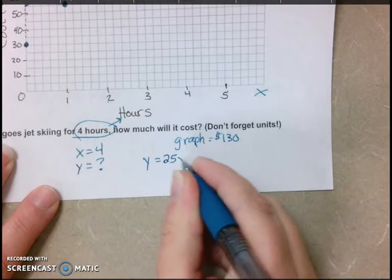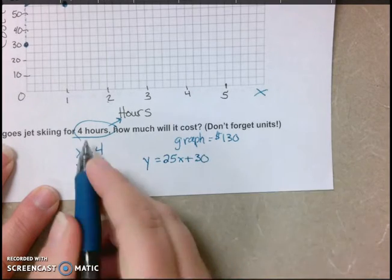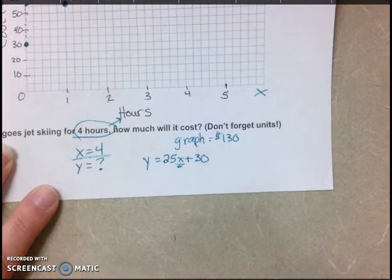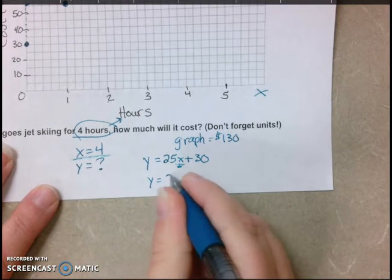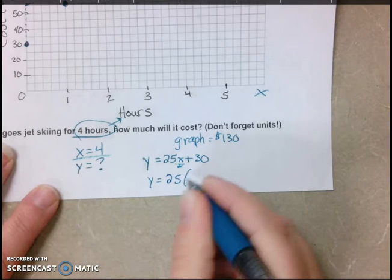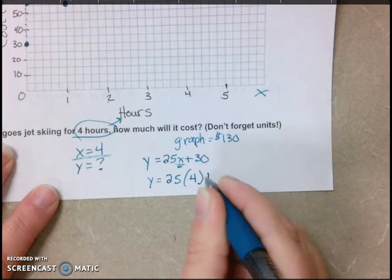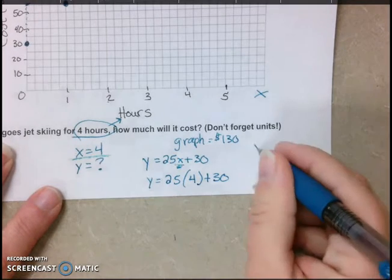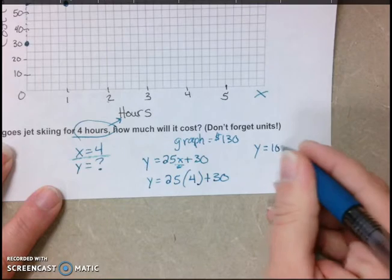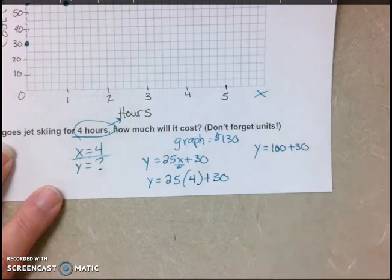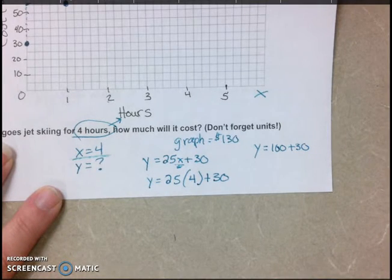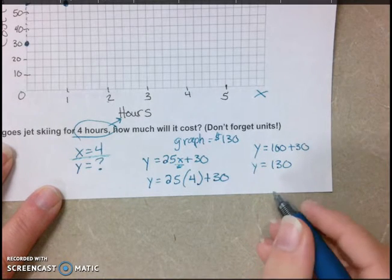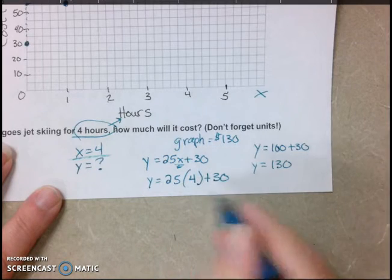You can also use the equation. So here's our equation. And after 4 hours, so that's when x is 4. So I plug that in for x here, and I can find y. So y equals $25 per hour, and it's for 4 hours, plus the $30 insurance fee. So 25 times 4 is going to give me 100. So for 4 hours, $25 an hour, that would be $100, plus the $30 fee for insurance. So I got y equals 130 using this math here.